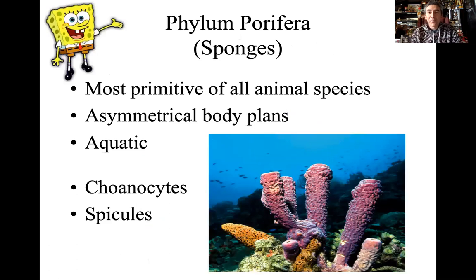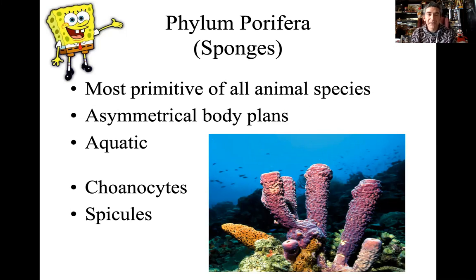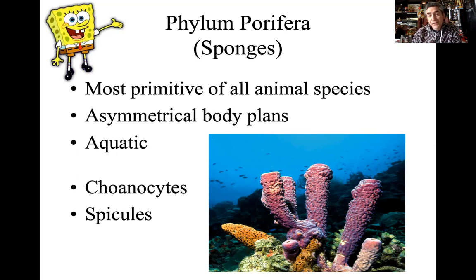Welcome to Phylum Porifera — the sponges. A lot of you probably learned about this category from a very famous little cartoon character. Sponges are technically asymmetrical and the most primitive of all animal species — debatable with the ctenophores. They are aquatic, primarily living in saltwater. They evolved in saltwater but have radiated out into freshwater lakes, streams, and ponds. We primarily associate them with ocean, aquatic marine environments. Key vocabulary terms you need to know: choanocytes and spicules.